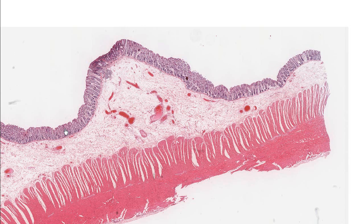This is a resection of colon. Similar to all the locations in the GI tract, we have four layers. We have our mucosa up here, which is bounded by muscularis mucosa. We have our submucosal layer with connective tissue and blood vessels. We have our muscularis propria, composed of an inner and outer smooth muscle layer. And then we have our serosa as the outside layer.